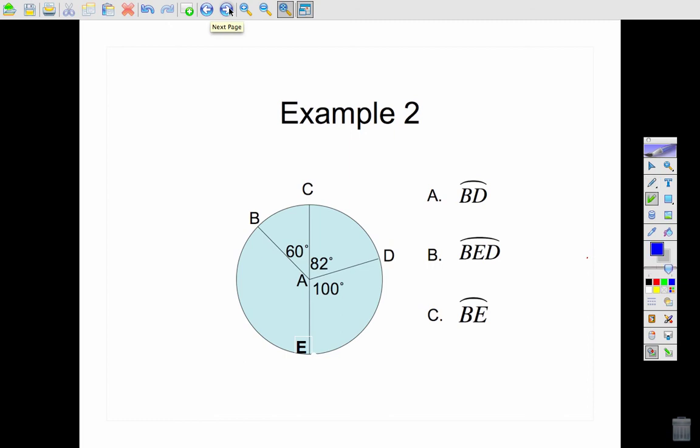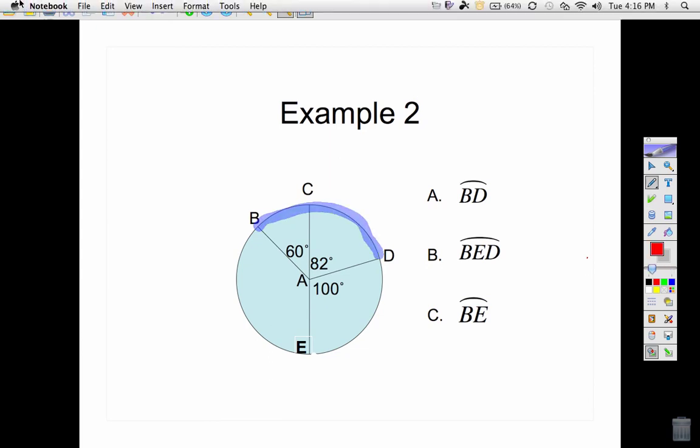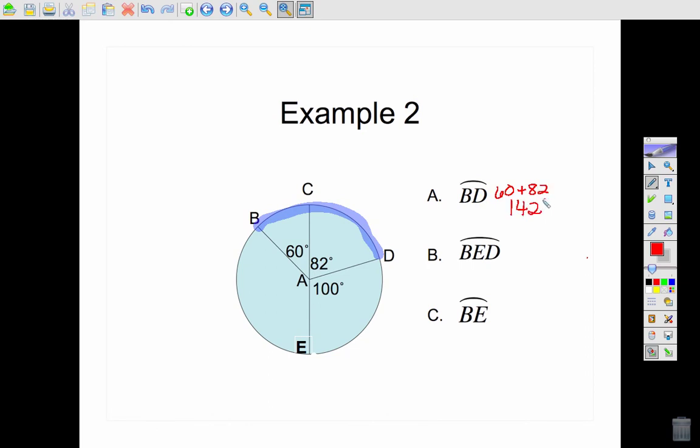Example 2, arc BD. I would just add those two arcs together, I'm looking at those two arcs. So I add the 60 plus the 82, and that is 142 degrees.